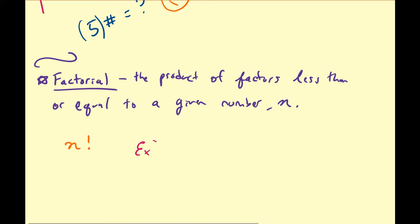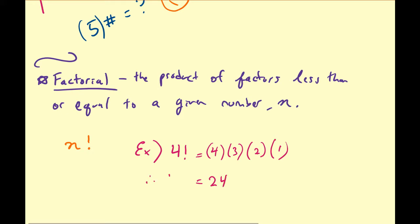So what is a factorial and how do you calculate it? Let's do a couple of examples. What would 4 factorial be? By definition, 4 factorial equals 4 times 3 times 2 times 1. So 4 times 3 is 12, times 2 is 24, times 1 is 24. So 4 factorial equals 24.